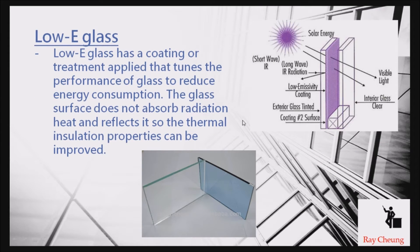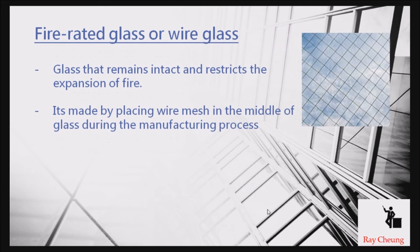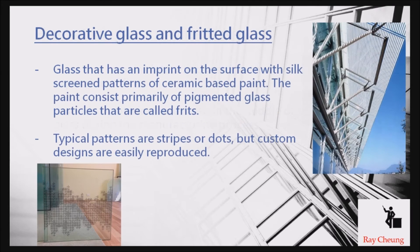If you consider energy consumption to be very important, sometimes the architect will choose so-called low-e glass to reduce radiation going into your building. Glass can also be protected by fire — you sometimes use wired glass, which is a fire-rated glass. And there is another type called frit glass, which has some pattern within the glass to prevent sunlight going directly into your building.